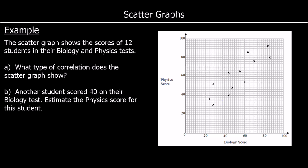Here's an example. Here's a scatter graph, and it shows the scores of 12 students in their biology and physics tests. What type of correlation does the graph show? We can see it's heading up — as the biology scores go up, the physics scores go up as well. So that is a positive correlation.